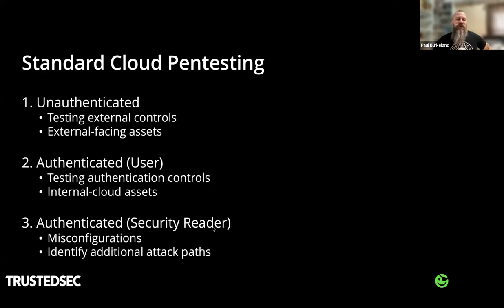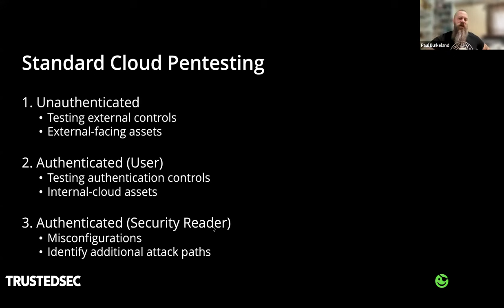When we do our standard cloud pen test, we'll often start out from an unauthenticated vantage point — really testing that external perimeter, seeing what we can find, what users we can identify, password spray, et cetera. From there, we move into an authenticated testing model where we use a valid user credential, either discovered or provided, test conditional access, and look at what normal users might have access to. SharePoint might be littered with secrets that shouldn't be there. The third method is taking a higher-level look using security reader or similar, identifying misconfigurations and attack paths throughout the environment.